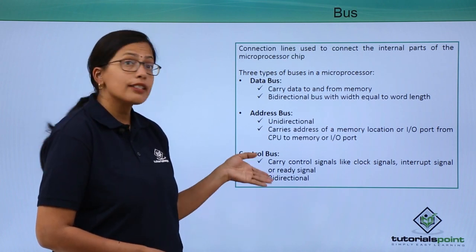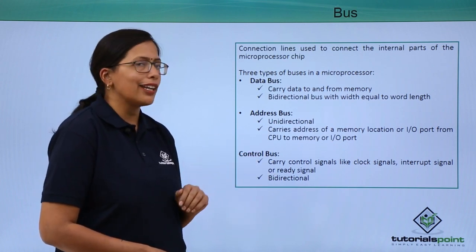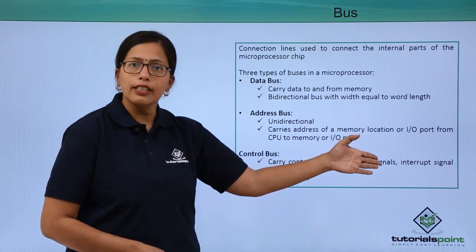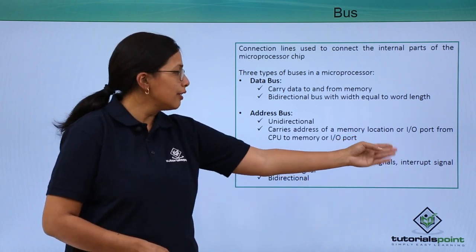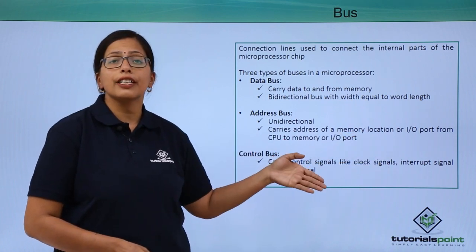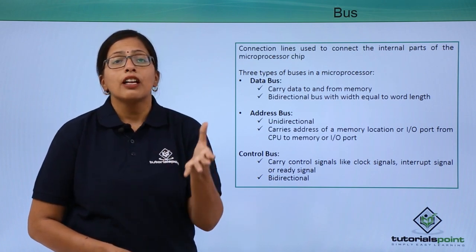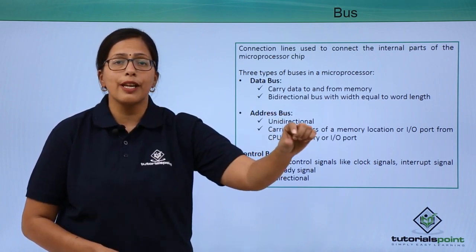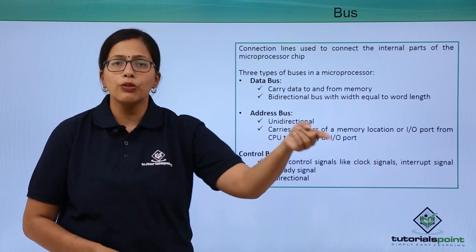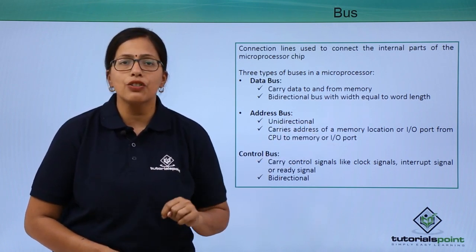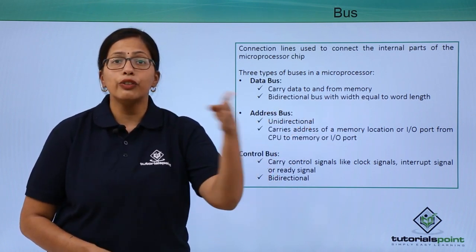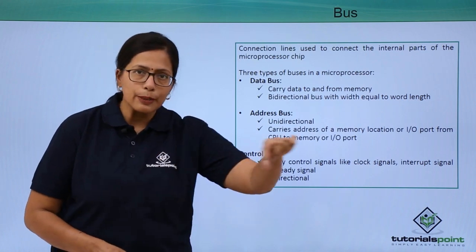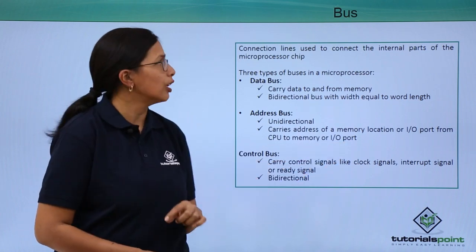The control bus is again bi-directional. It carries control signals like clock signals, interrupt signals, or a ready signal. For example, if the ALU has been accessed and wants to send an instruction or data, the ALU will send a ready signal indicating it is ready — so this bus has to be bi-directional.